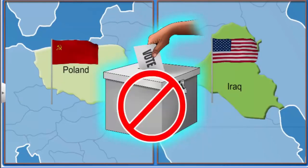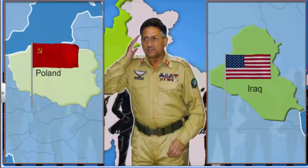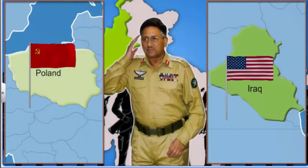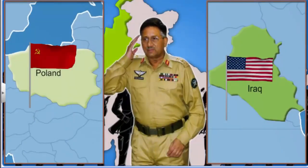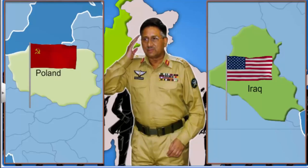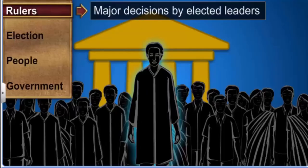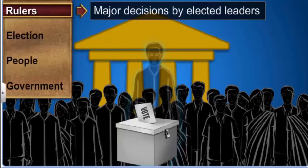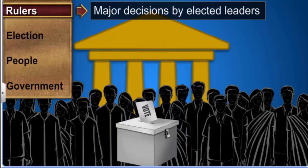From all these examples, it is clear that in a democracy, the elected representatives of the people should have the final decision-making power. This is the first feature of democracy. Let's move on to another key word: elections.